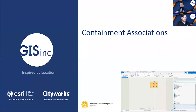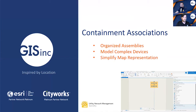In other words, containments allow for a dense collection of features to be represented by a single feature on the map, either with polygons or linear point representations. And it really gets interesting here because the utility network allows for nested containers, as well as a one-to-many relationship between content and containers.